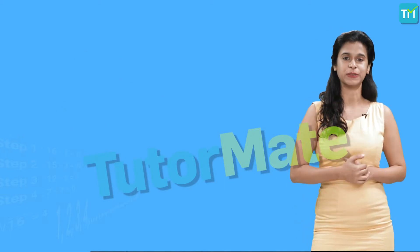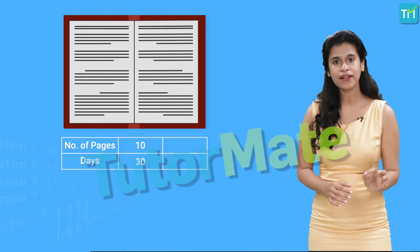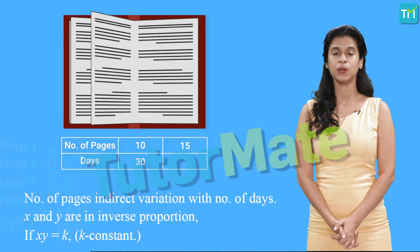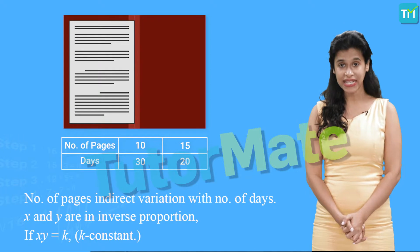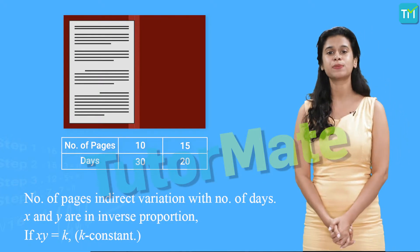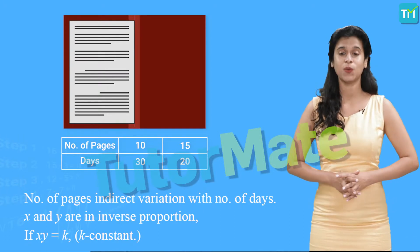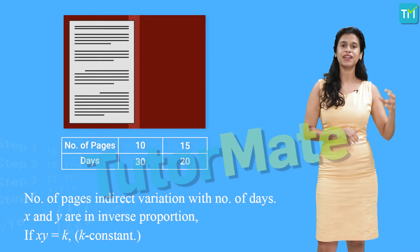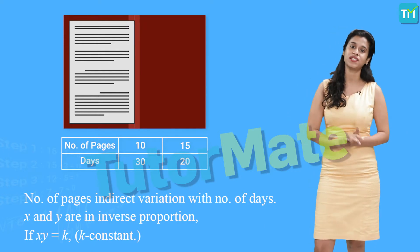Now let's look at a different example. Say we have a book that has 300 pages in total. If we read 10 pages every day then we will complete it in 30 days, because 300 upon 10 is equal to 30. At the same time, if we read 15 pages every day we will complete reading the book in 20 days, because 300 divided by 15 is equal to 20. So as we increase the number of pages we are reading per day, the number of days decreases — that is, one quantity increases when the other quantity decreases.